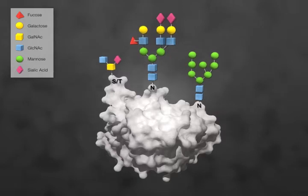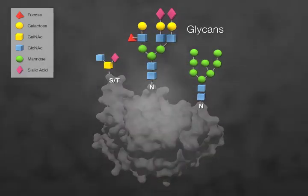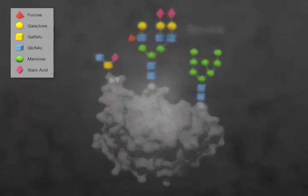Secretory and membrane proteins are often post-translationally modified with sugar chains called glycans. Glycans are essential for the stability and function of the mature protein.